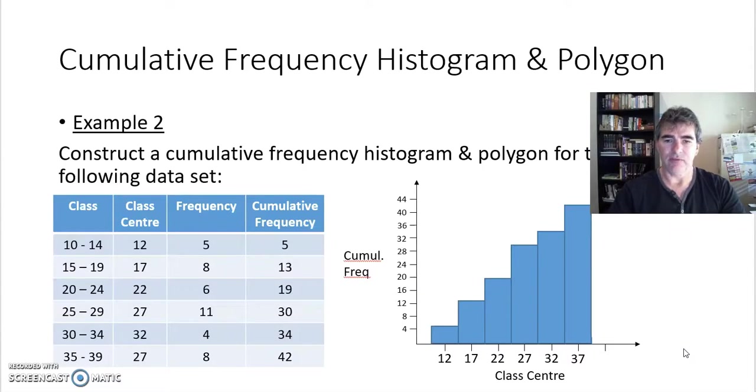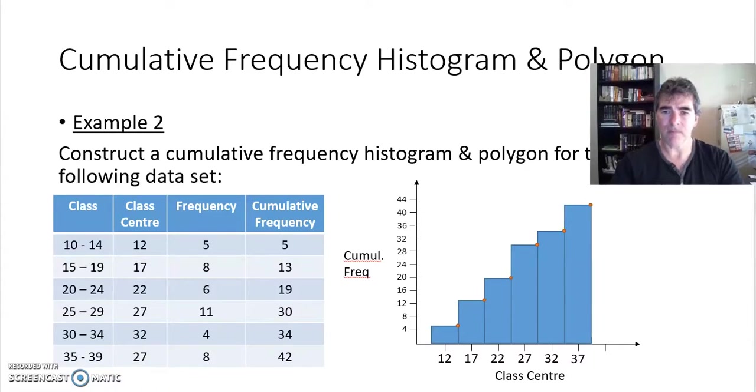And we complete our graph as I've shown you in all your videos. So there's my cumulative frequency histogram. To do my polygon, remember the dots get placed in the top right-hand corners of the columns all the way up to the top there. And then join them with the beginning, and we go and do so. And there's my cumulative frequency polygon on top of the histogram for the grouped data. So not much different from the previous one, except I've got class centers down there.